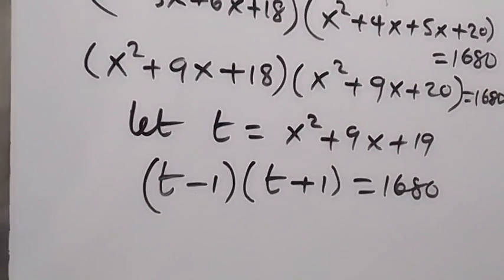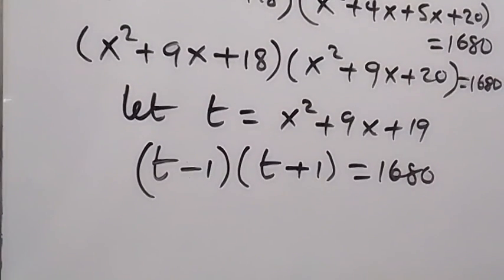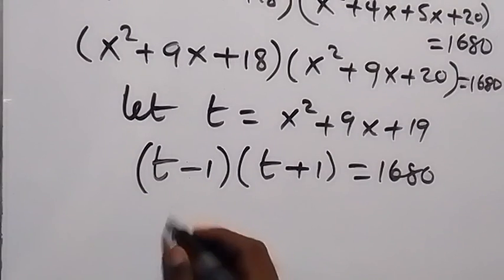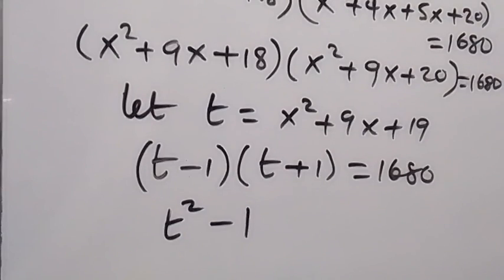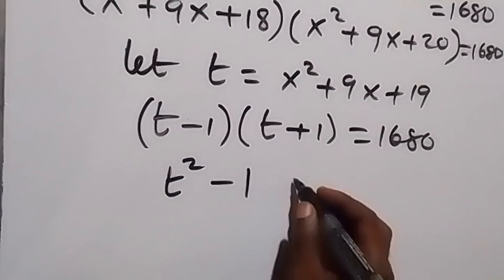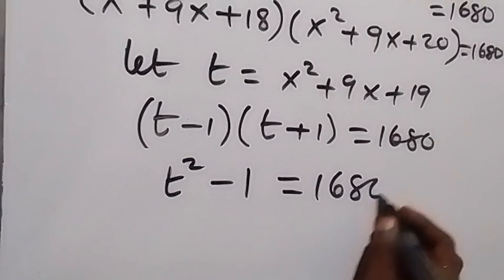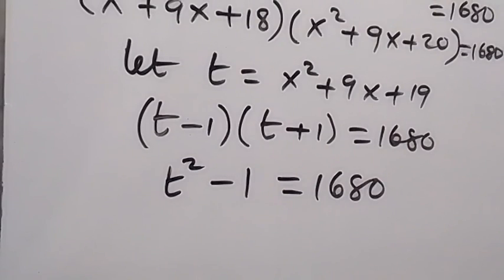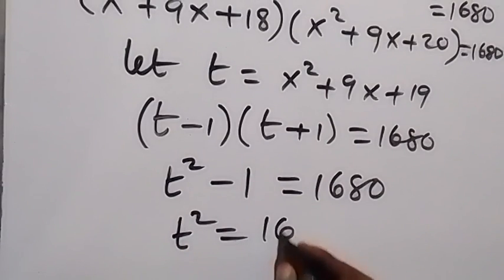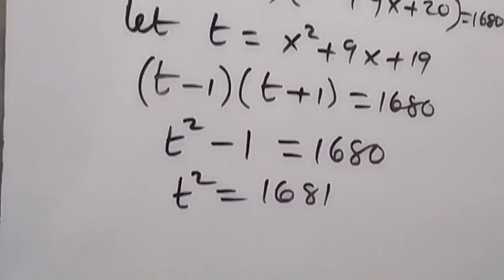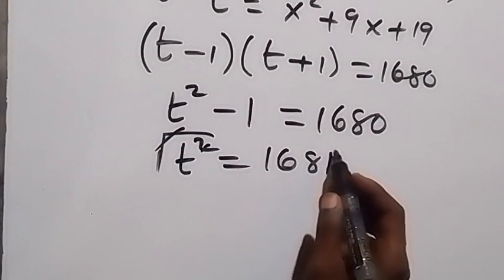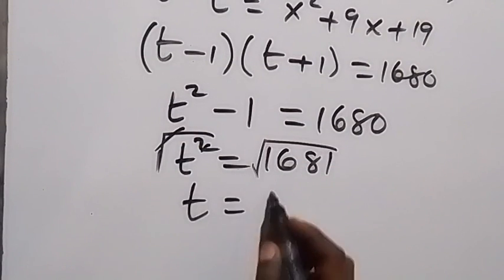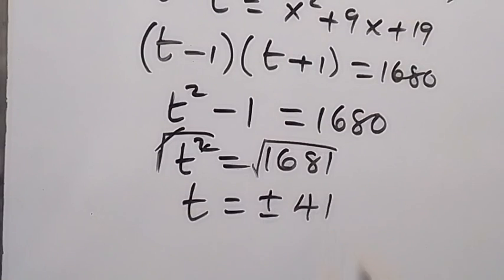This is in the form of a difference of two squares, so (t−1)(t+1) = t²−1 = 1680. Taking the −1 to the other side gives t² = 1681. Taking the square root of both sides, we get t = ±41.